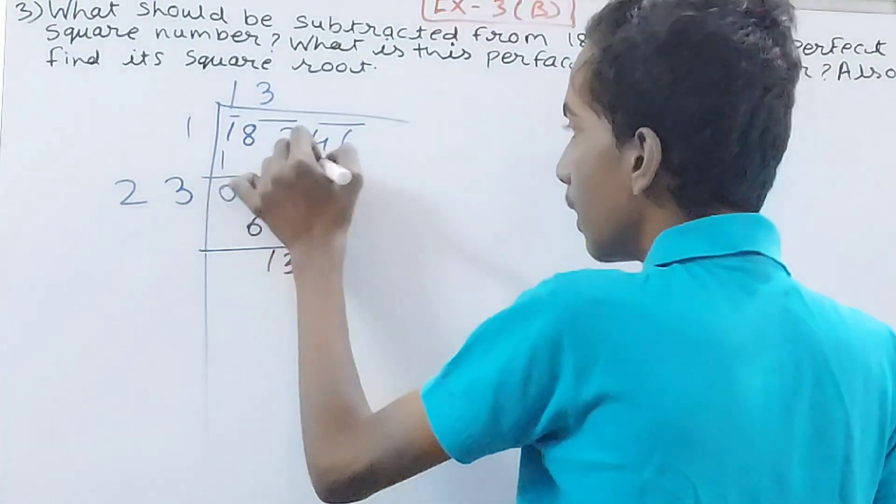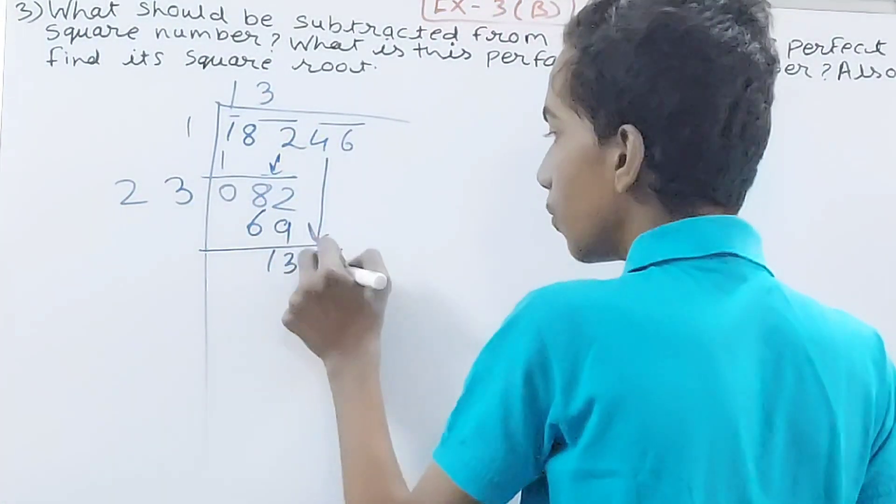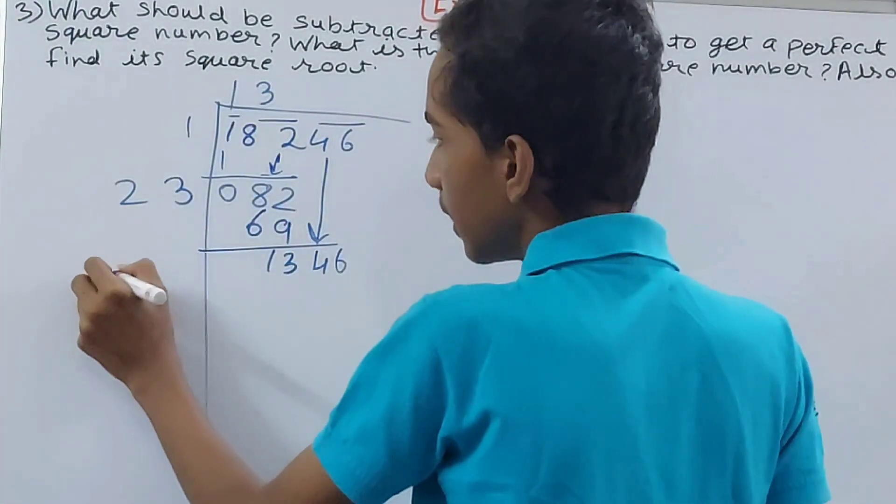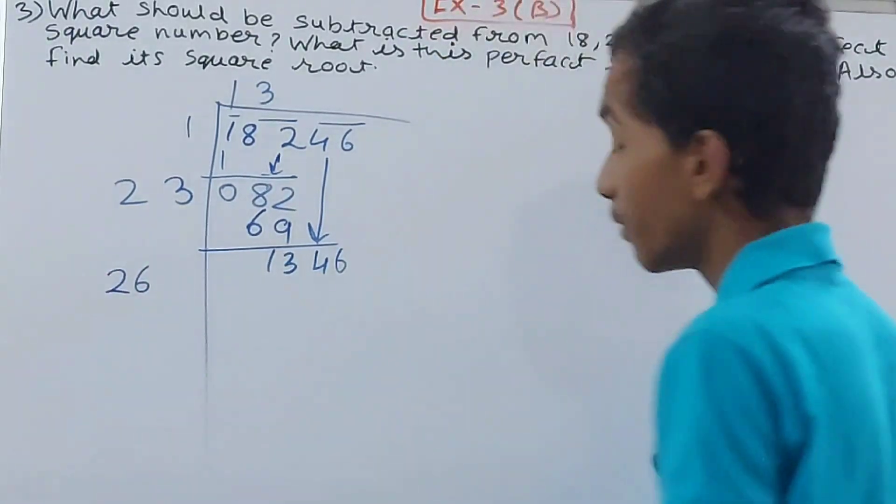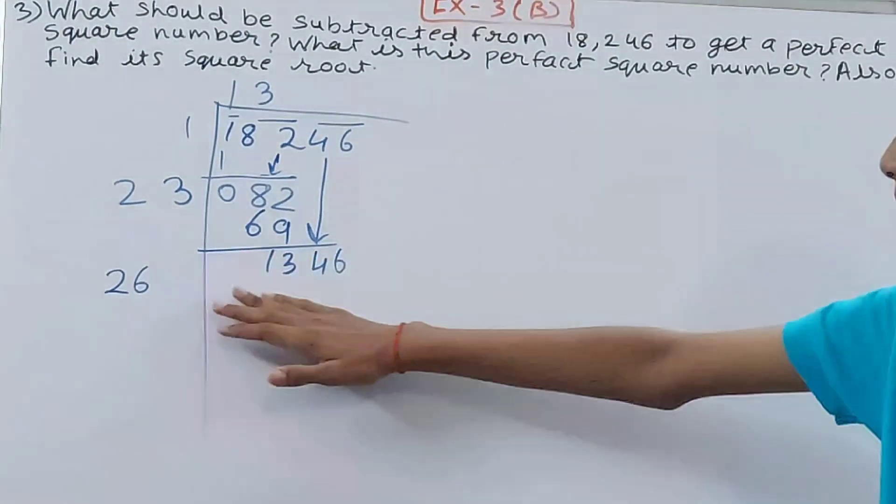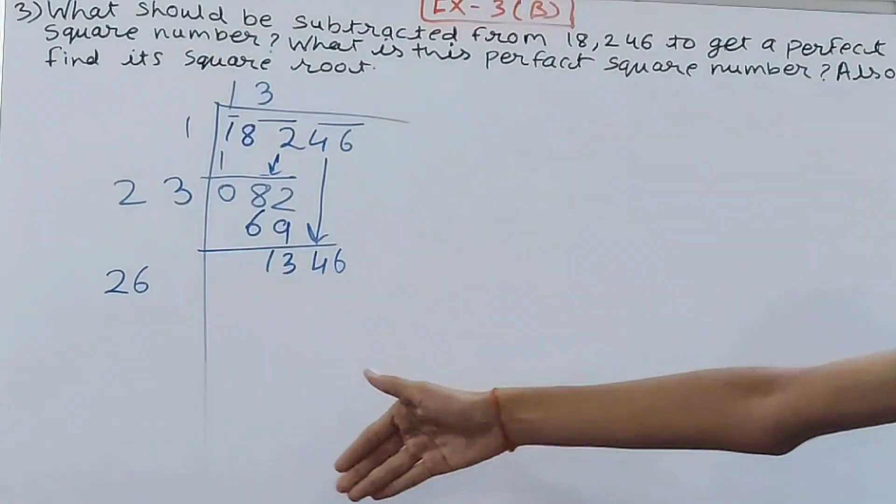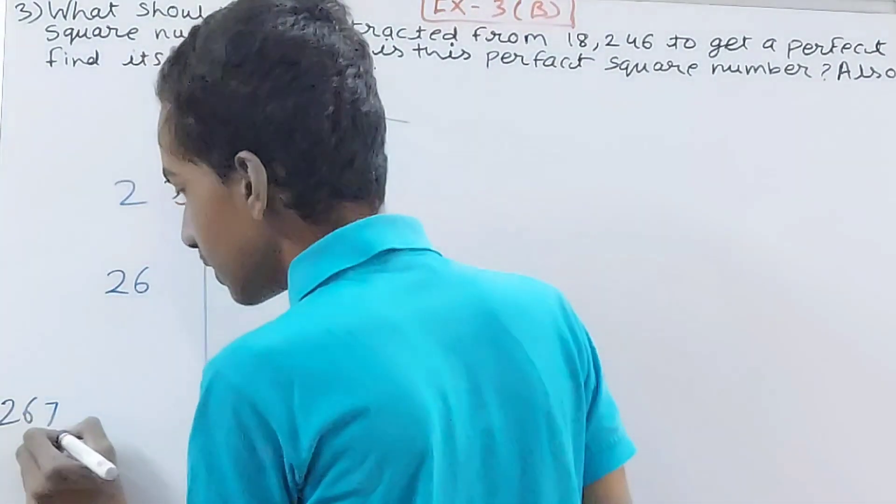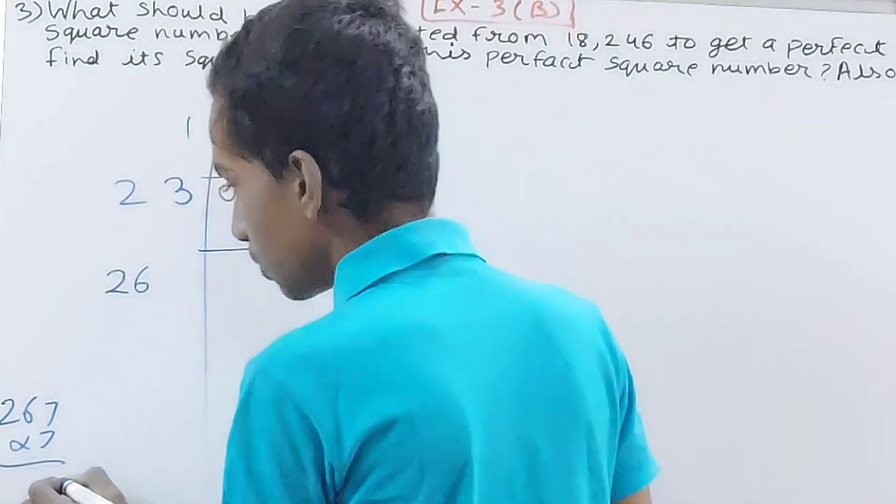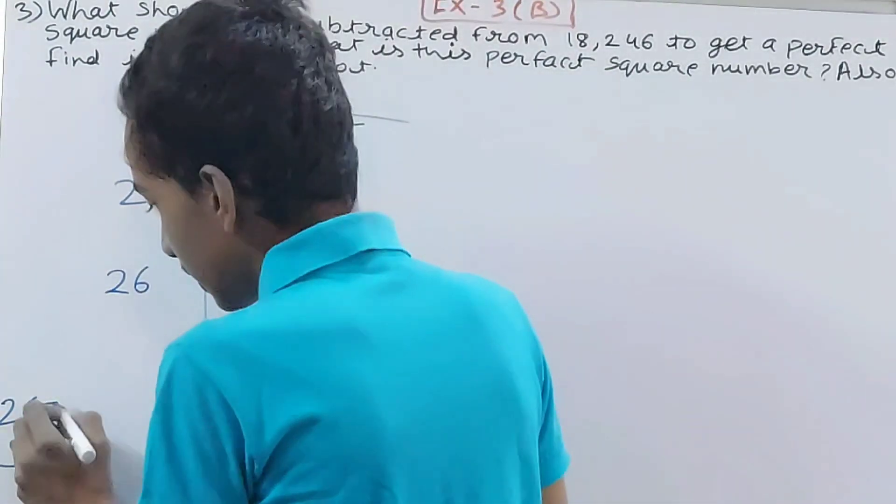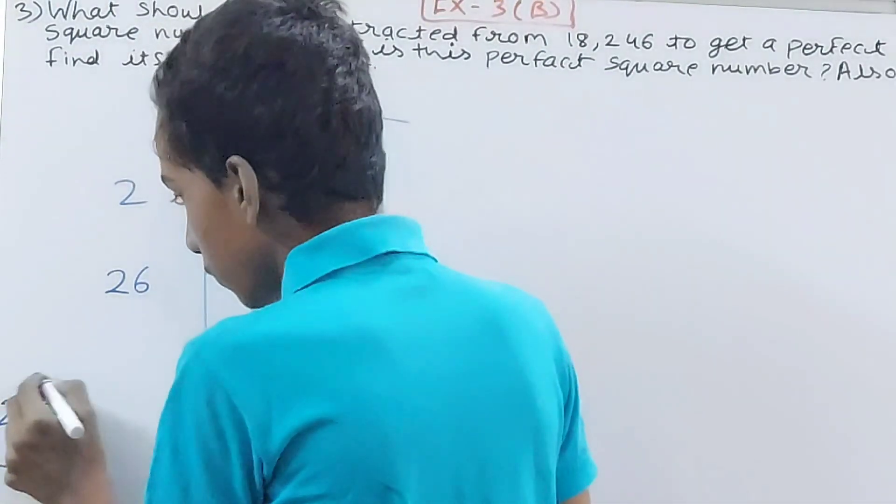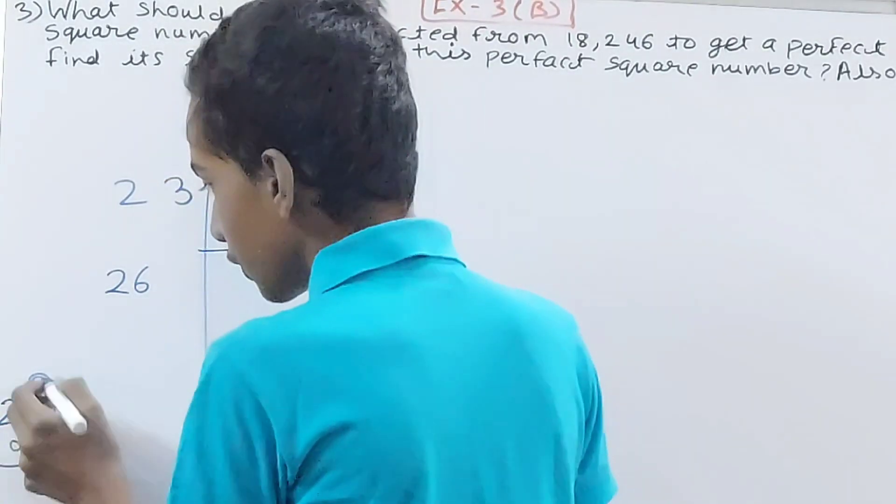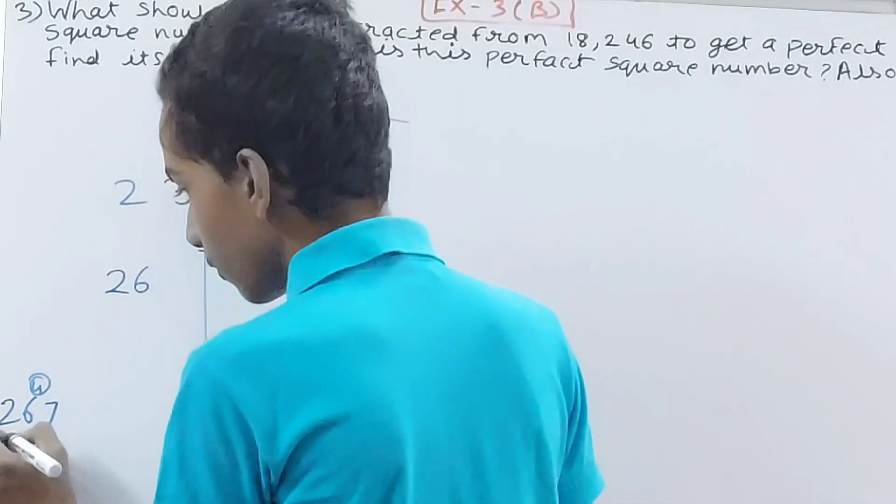So 46 will come. Double of 13 is 26. That will come over here. Now let's see what nearest number can we take. Let's say 7. So 267 into 7, which is going to be what? 7 sevens are 49. 4, 7, 6, 42 and 4, 6 and 4, 7 to the 40 and 4, 18, 18, 1869, which is definitely coming more.